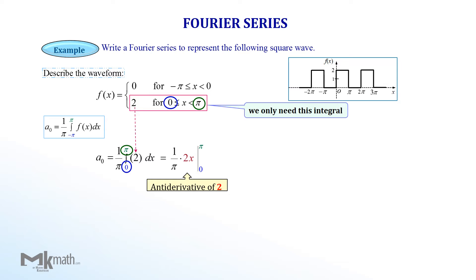Since 2 is the constant, we pull it out from 2x. Substituting the upper limit pi and the lower limit 0 into the x to get 2 over pi times pi. Cancelling the 2 pi's to get the final answer as 2. So we have a0 equal 2.